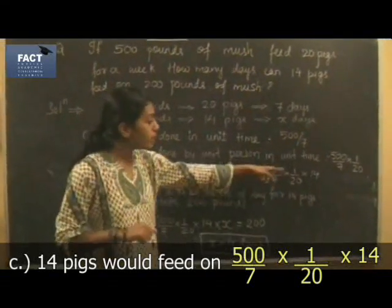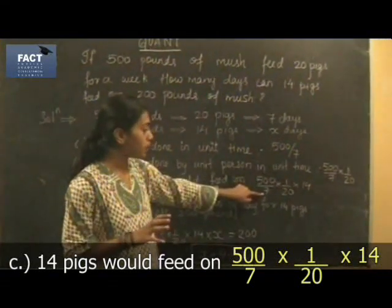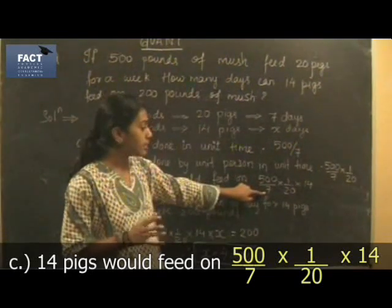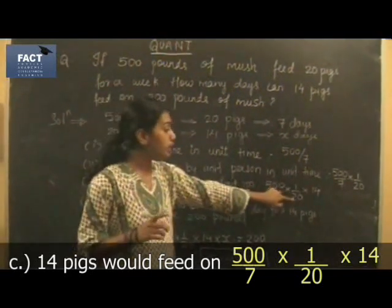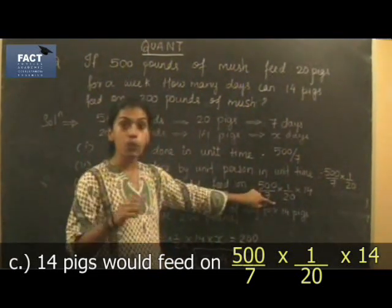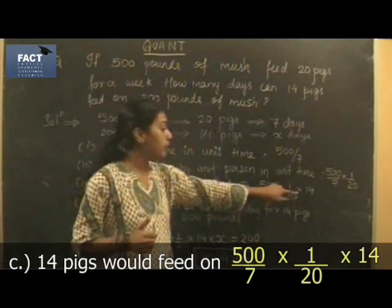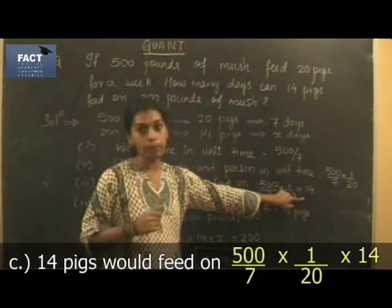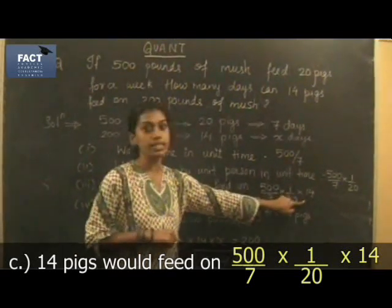Because 500 by 7 gives you the amount of mush eaten up by 20 pigs for one day. When you divide it by 20, now you have the amount of mush eaten up by one pig for one day. When you multiply it by 14, you get the amount of mush eaten up by 14 pigs in one day.